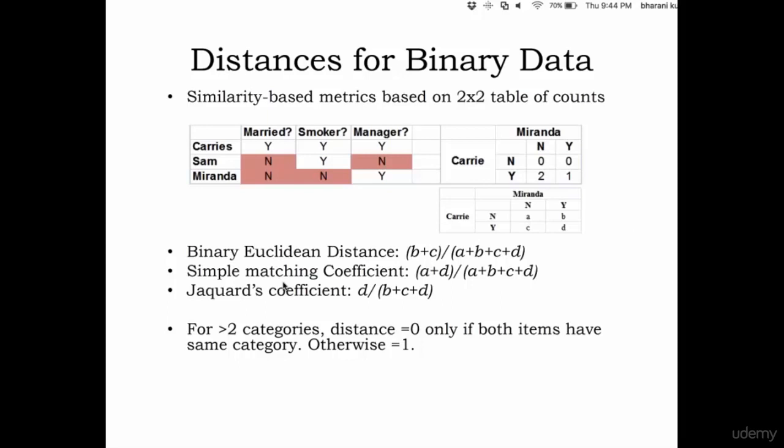Now there are three different ways of calculating the distance for binary data. Step one. Binary Euclidean distance. How do you calculate that?